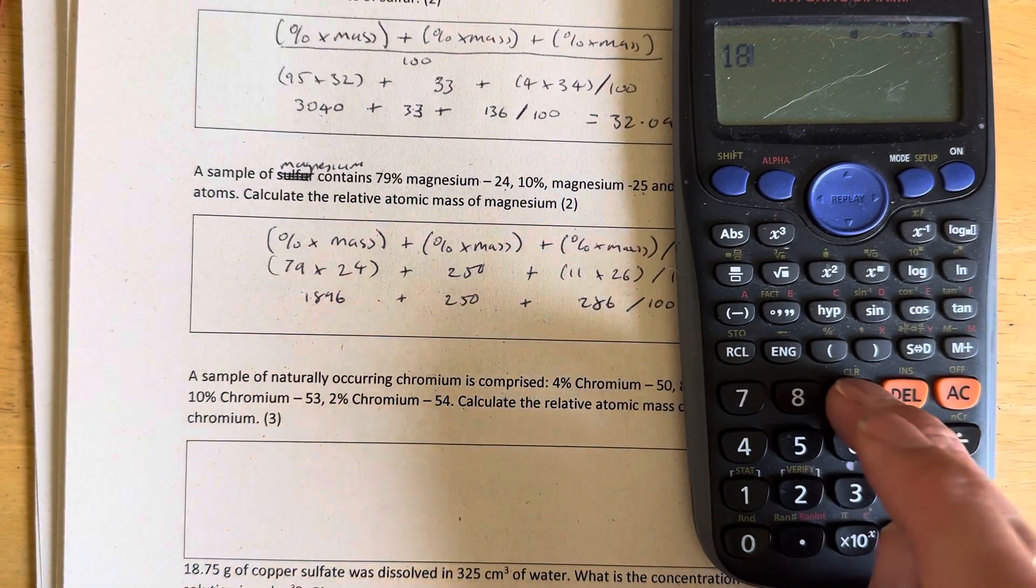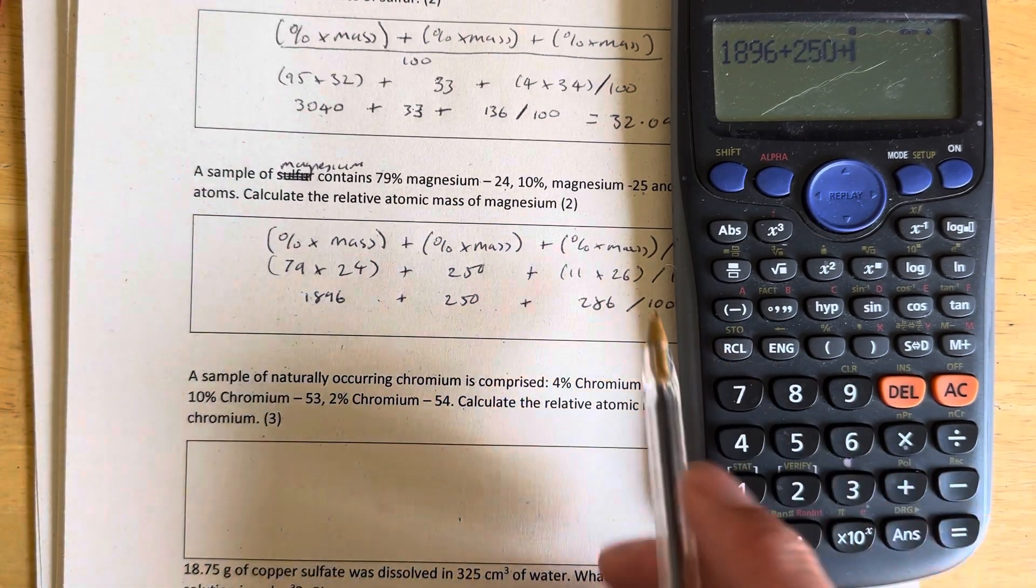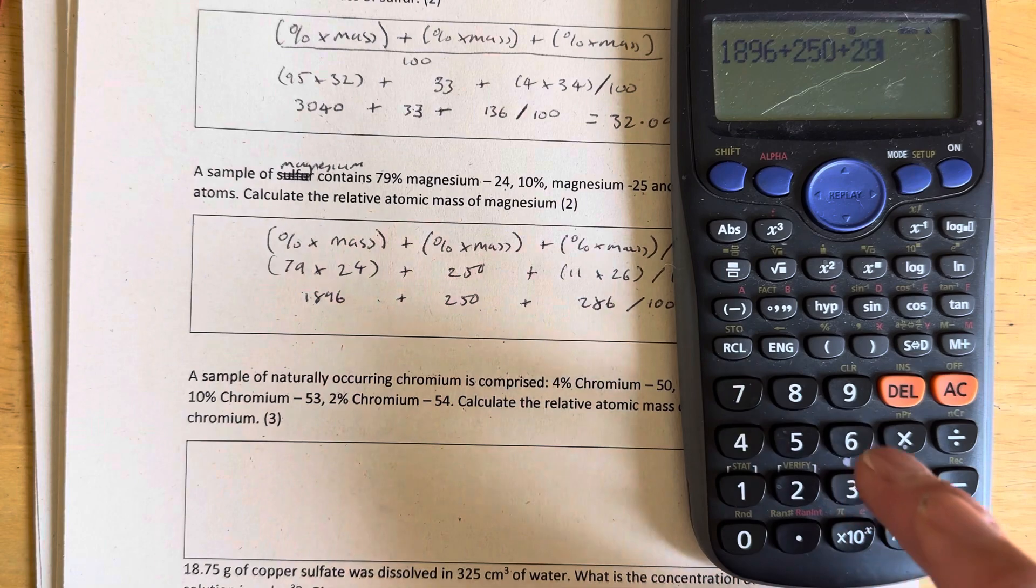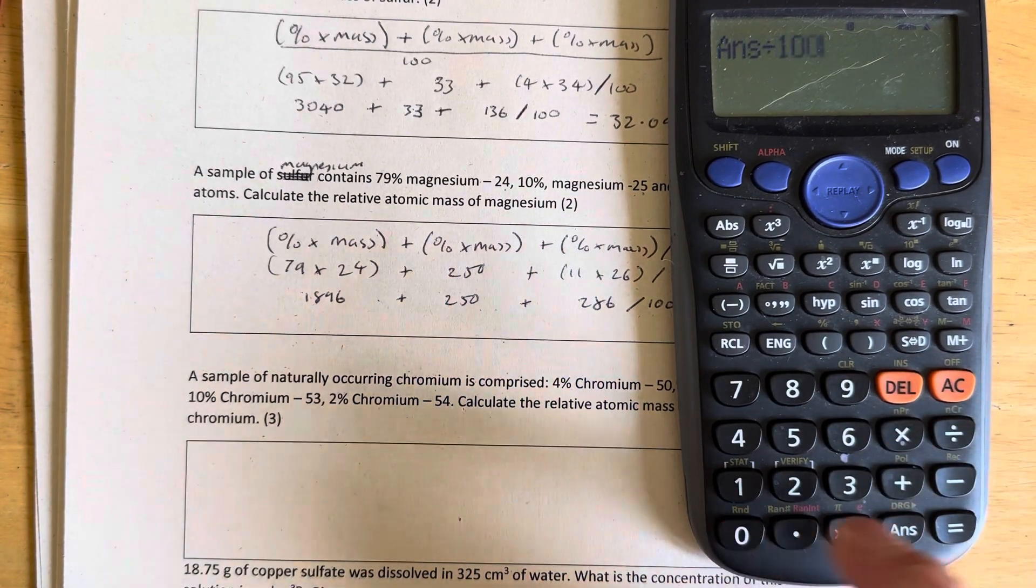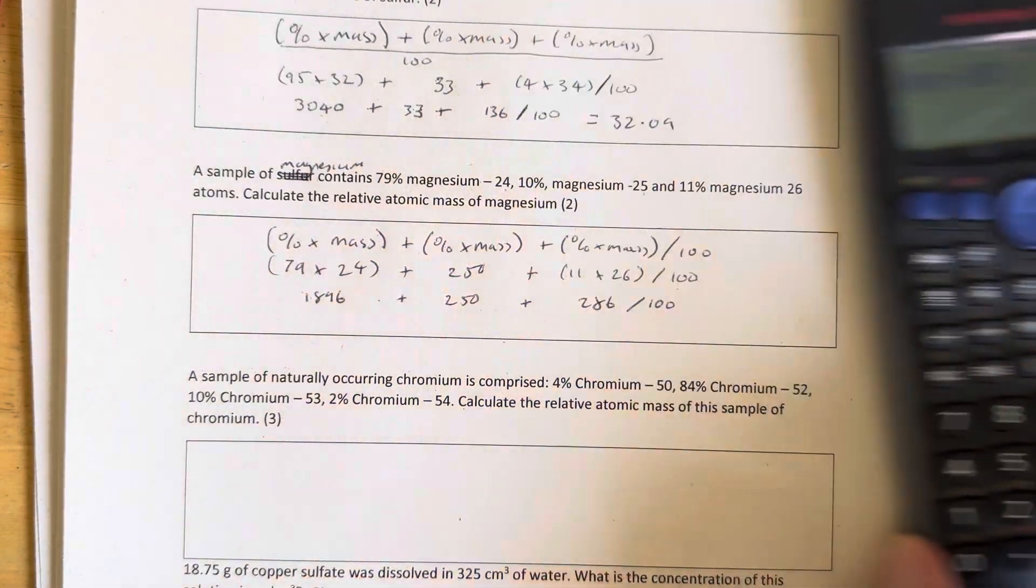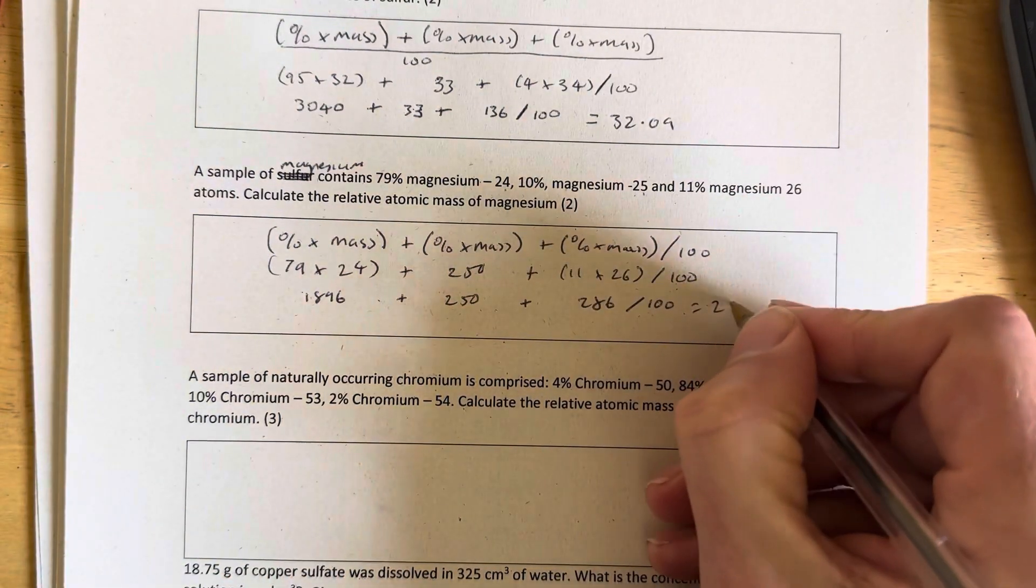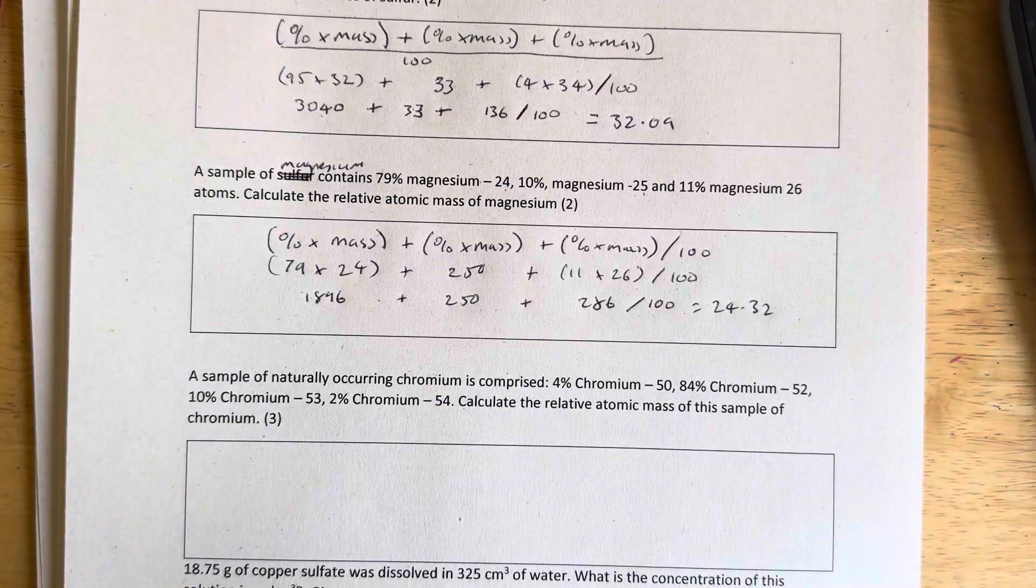So 1896 plus 250 plus 286 equals... divided by 100. Answer: 24.32. All these questions and more on alshamhighchemistry.com.